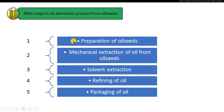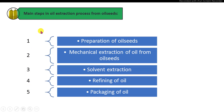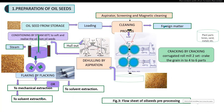The five main steps are: first, preparation of the oil seeds; second, mechanical expeller machines to extract oil by mechanical process; third, solvent extraction process to extract remaining oil; fourth, refining process to remove impurities from the extracted oil; and finally, the packaging of the oil.